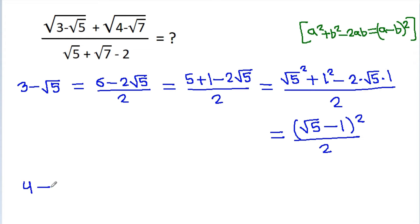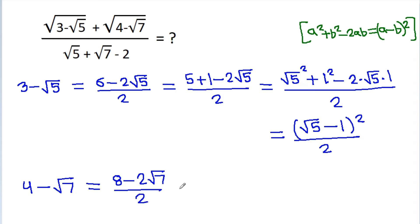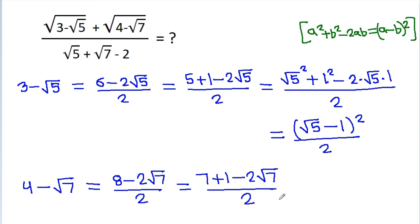And 4 minus square root of 7 is equal to 8 minus 2 times square root of 7, divided by 2. And 8 is 7 plus 1, so it becomes square root of 7 minus 1 squared, divided by 2.